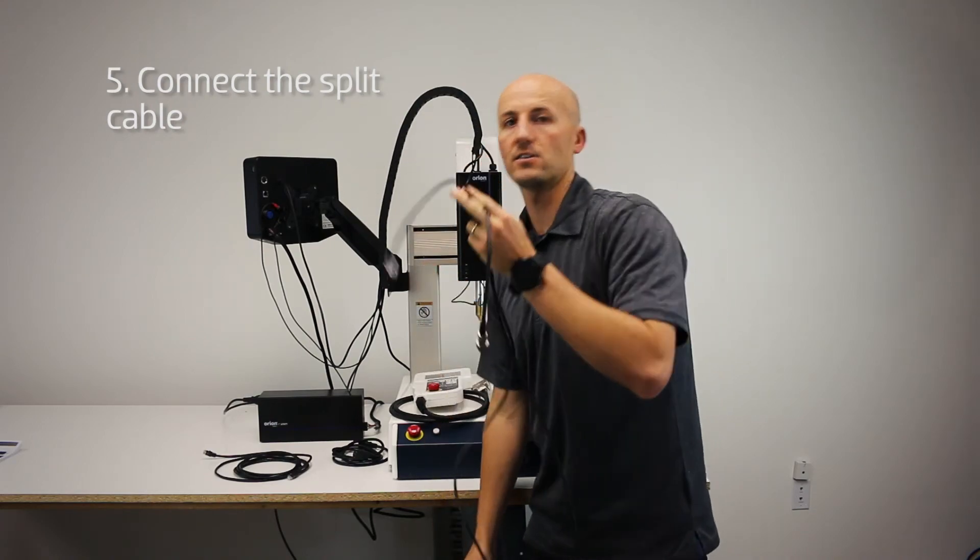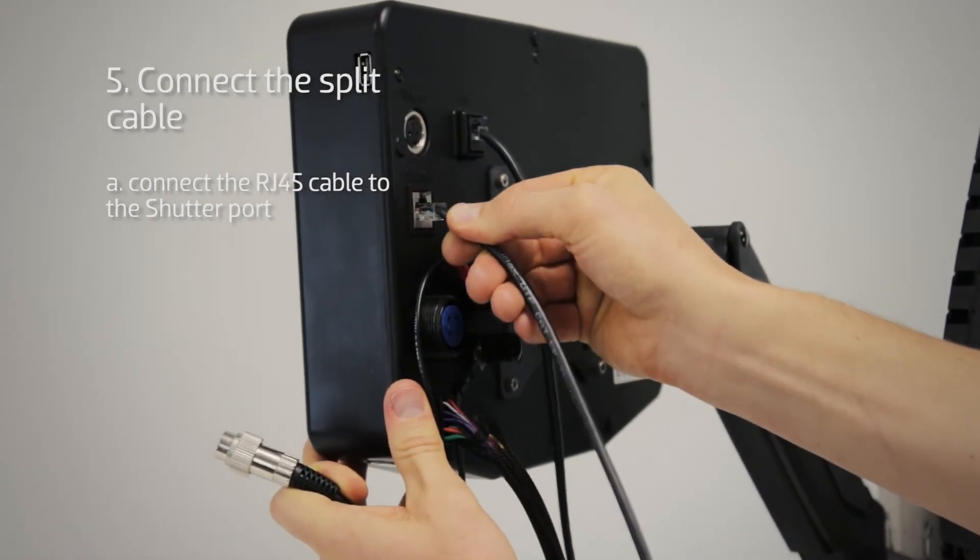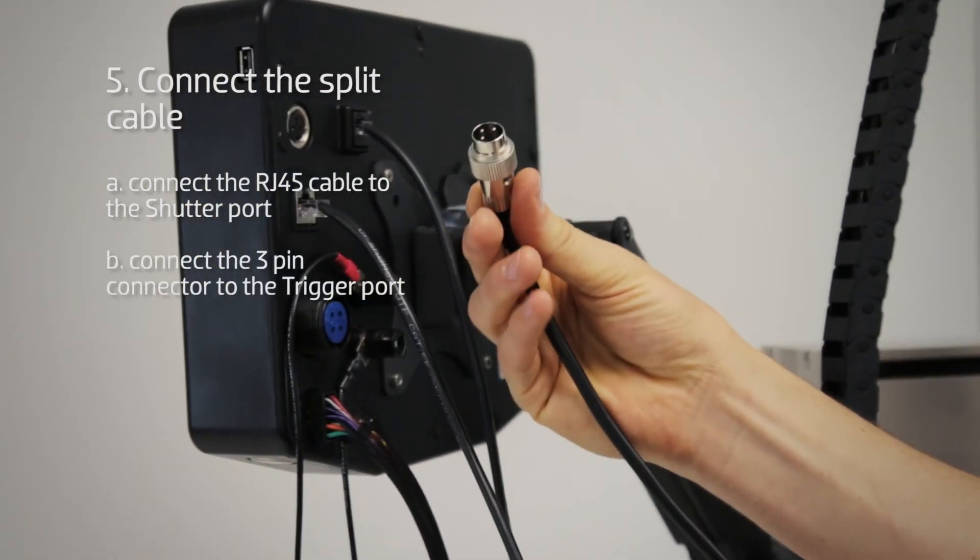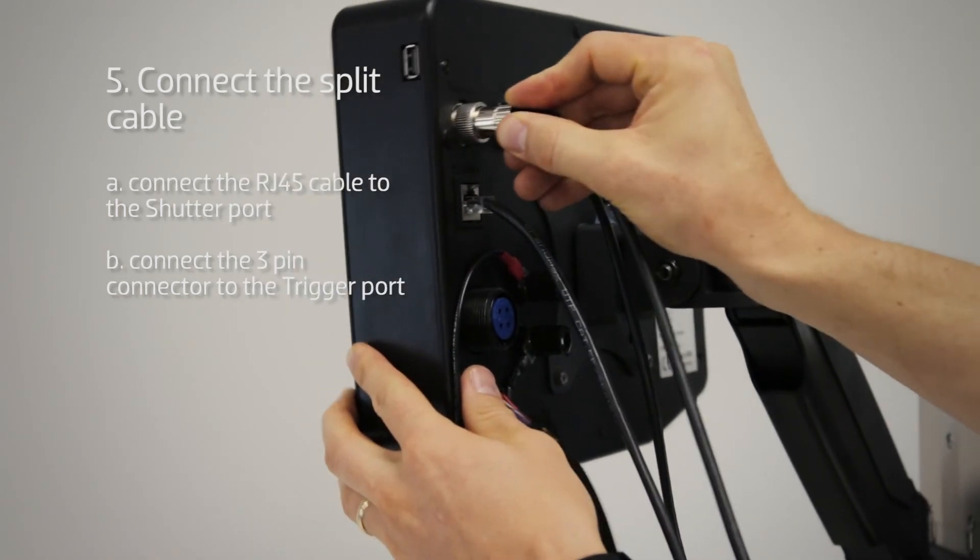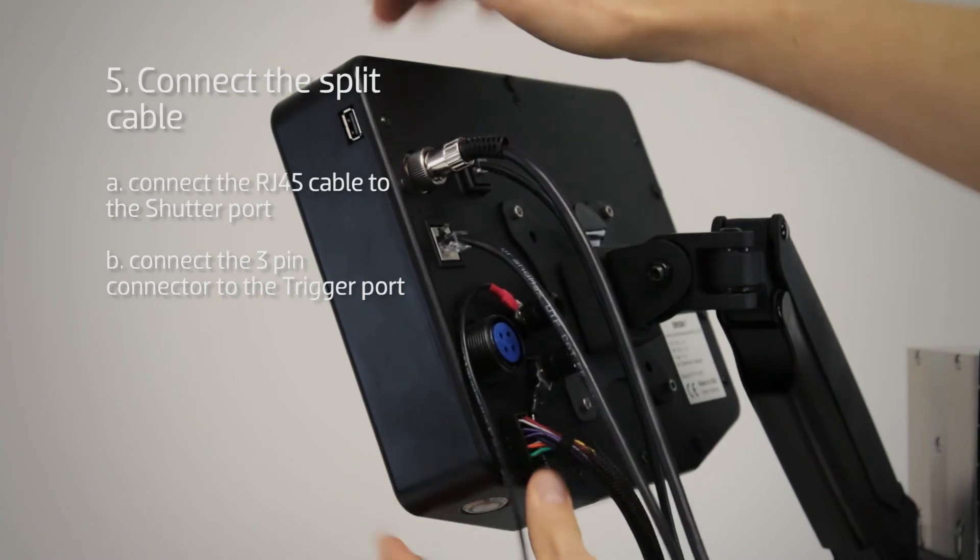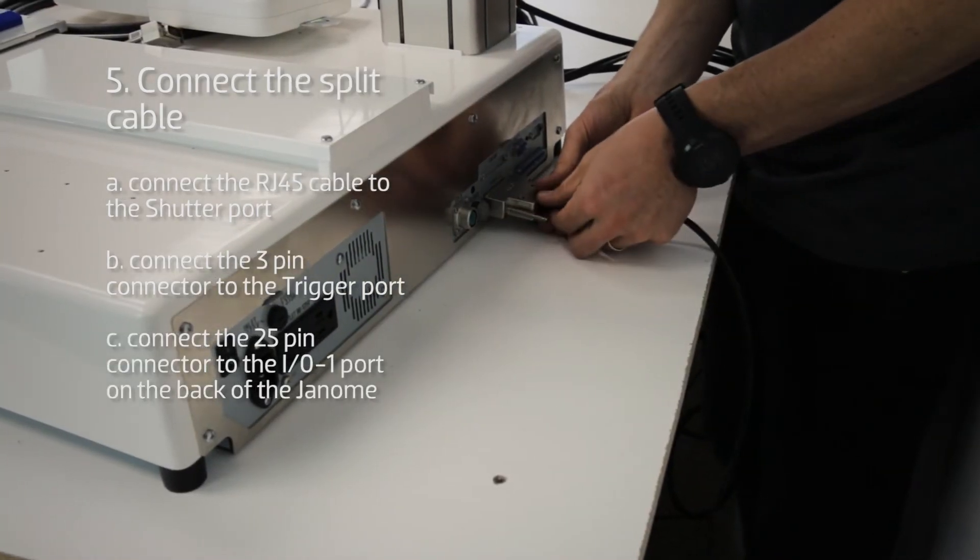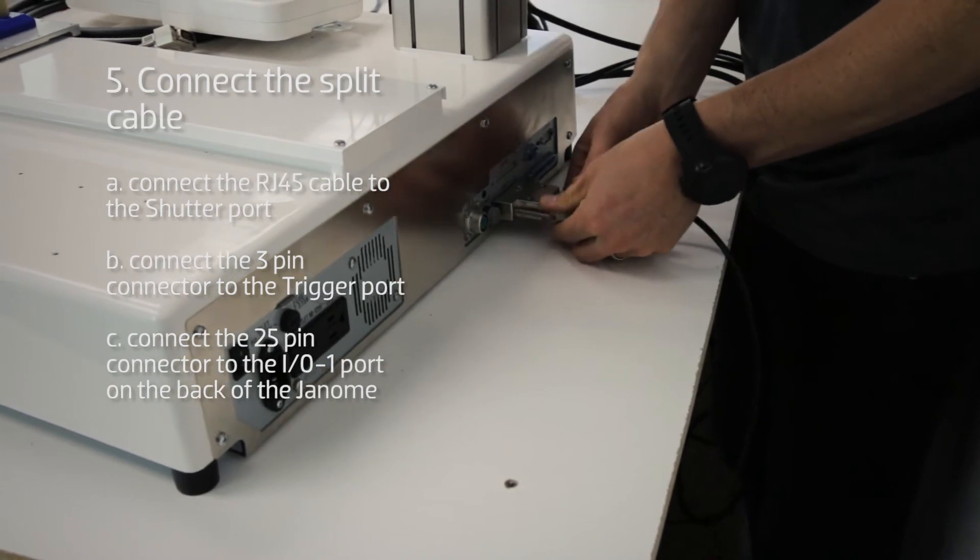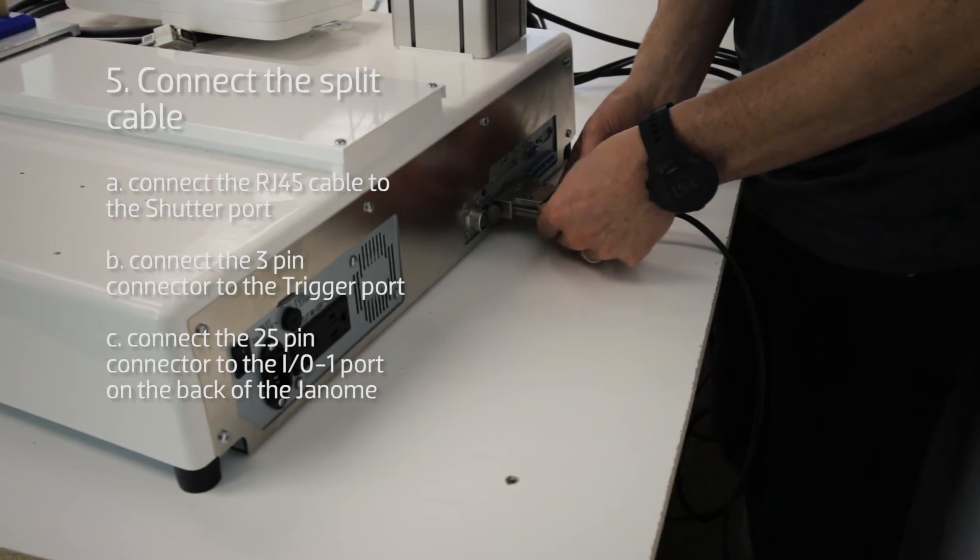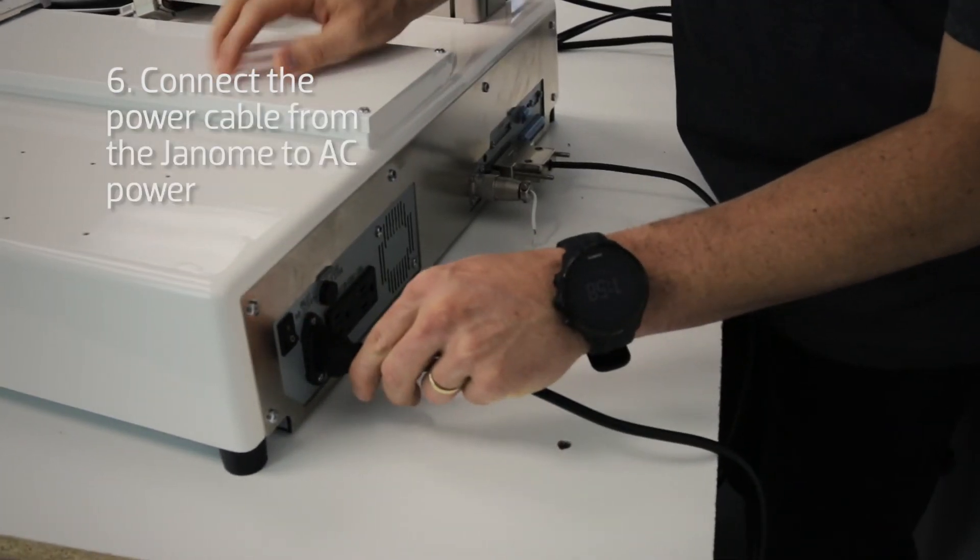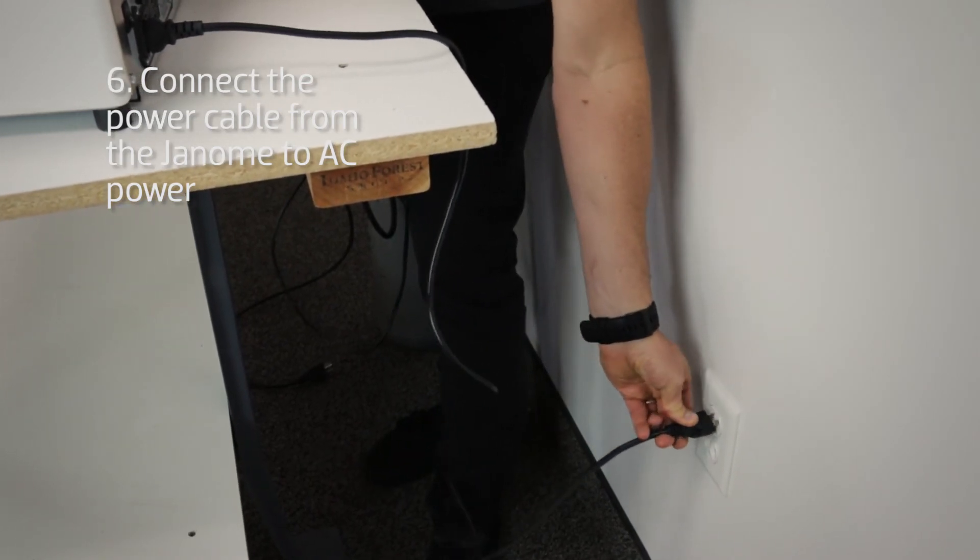This cable goes into the shutter port and this cable goes into the trigger port. Once you get that in, screw it down so it's secure. The other end of this cable goes into the back of the Janome. Next, plug the power cable from the Janome system to the AC power.